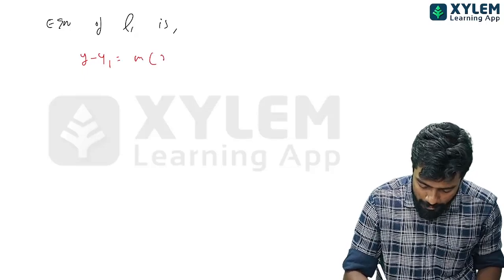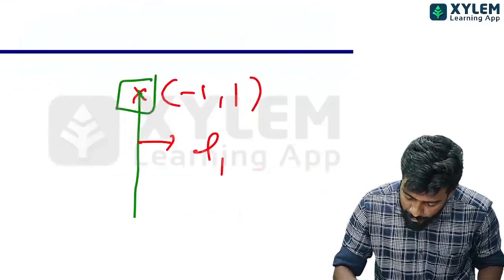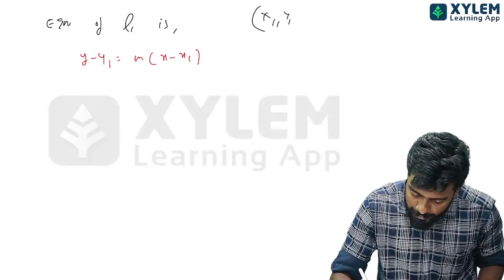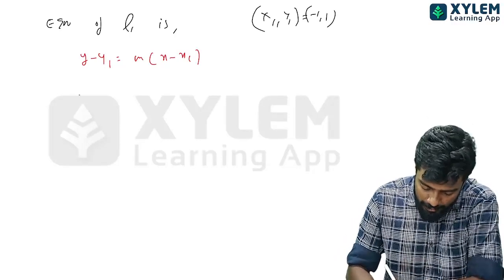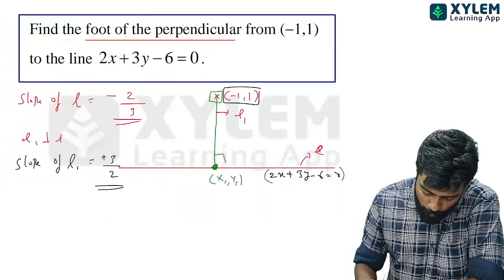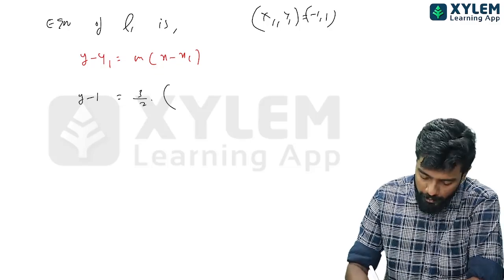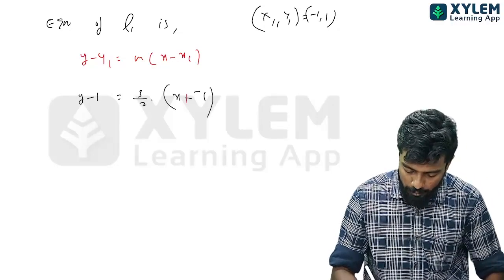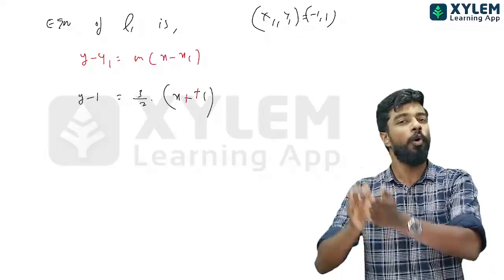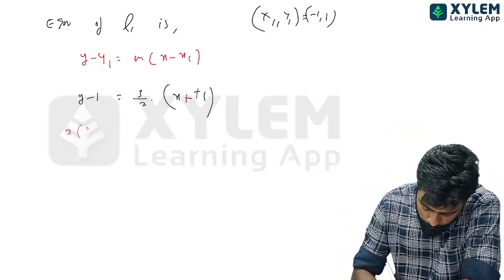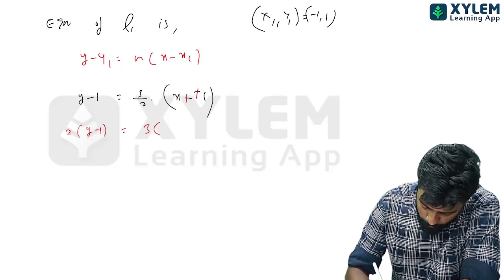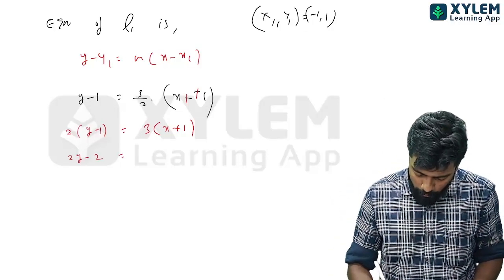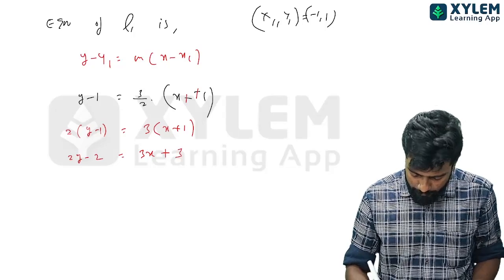Line L1 passes through point (-1, 1). Using point-slope form: y minus 1 equals m times (x minus x₁). Slope m₁ is 3 by 2 and x₁ is minus 1, so x minus (-1) is x plus 1. Cross-multiplying: 2 into (y minus 1) equals 3 into (x plus 1), giving 2y minus 2 equals 3x plus 3.